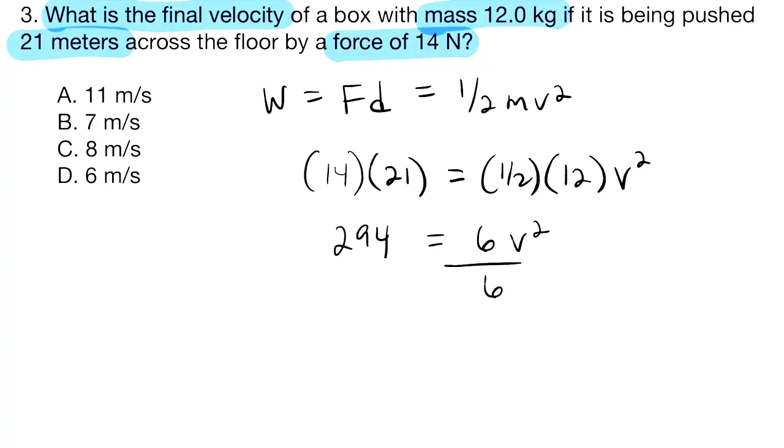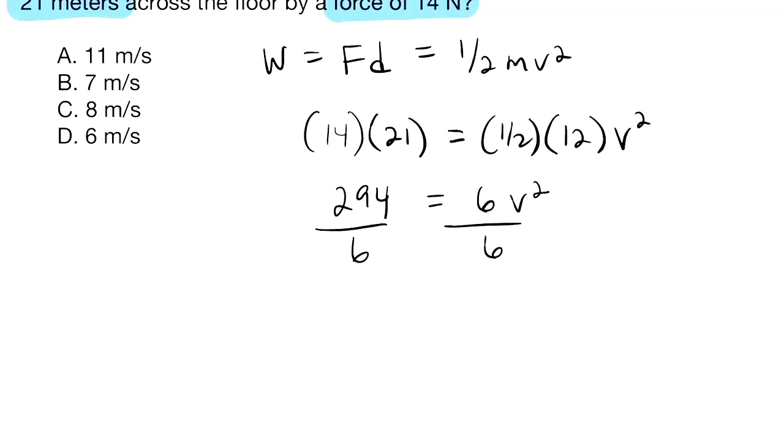So we are at 294 equals 6 times v squared, and I know I need to divide by 6 on both sides. I'm looking at 294 here. If I add 6 to that, I get 300, and I know that 300 divided by 6 is going to give me 50. But if I take away one of those 6s that I initially added to get to 300, that's going to end up being 49. So 6 goes into 294, 49 times.